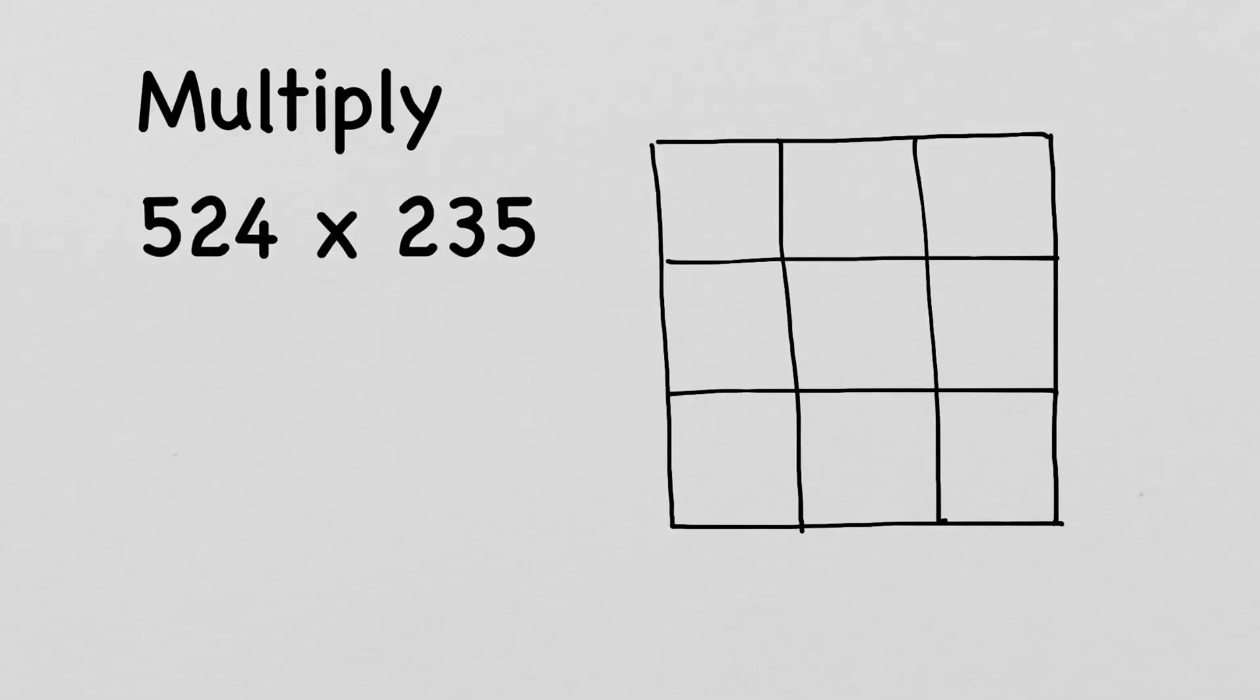Friends, I am going to use the box method. When there are two big numbers such as 524 and 235, we can simply use the box method, which is interesting and easy.